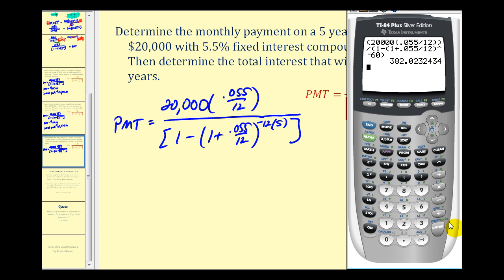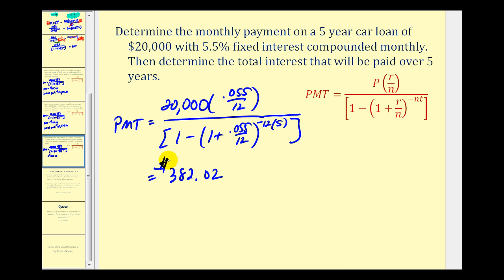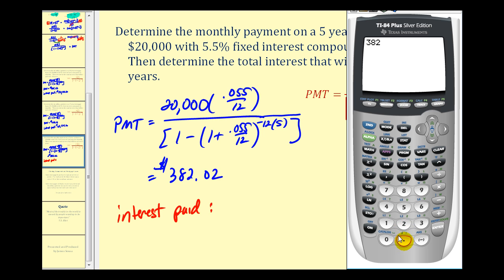Our monthly payment is approximately $382.02. The total interest paid over five years: we take $382.02 times 12 times 5 years, giving a total of $22,921.20 paid. Subtracting the $20,000 loan amount leaves us with almost $3,000 in interest — specifically $2,921.20.